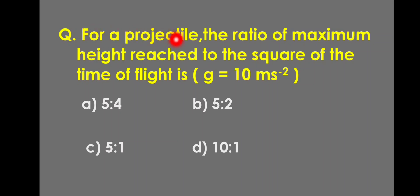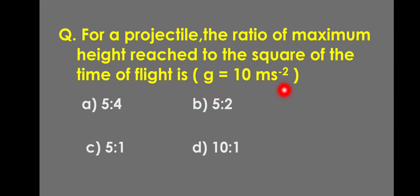For a projectile, the ratio of maximum height reached to the square of the time of flight is given as G = 10 meter per second square. Options: A) 5:4, B) 5:2, C) 5:1, D) 10:1.